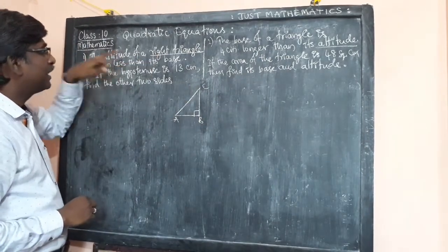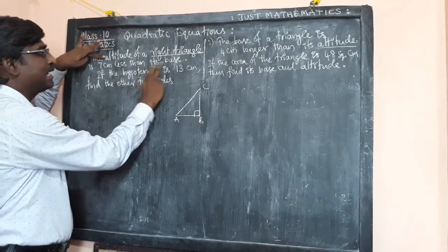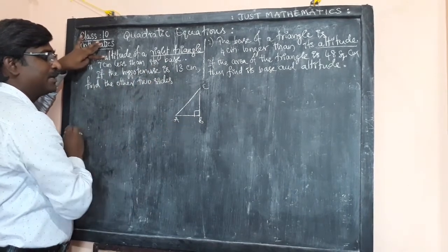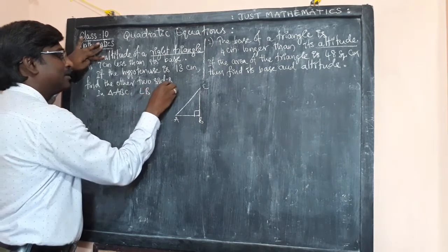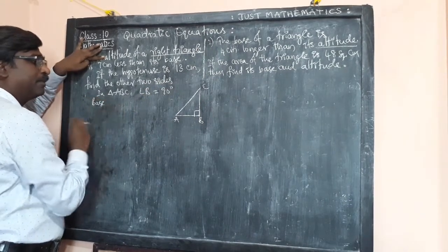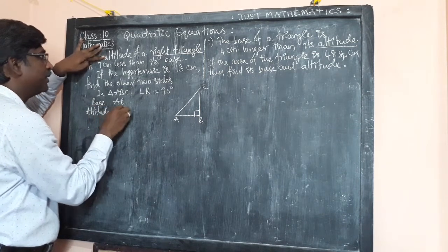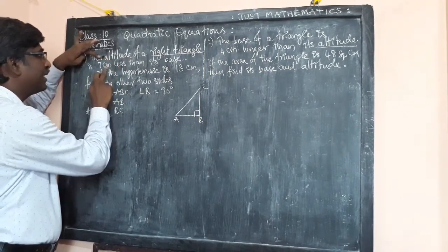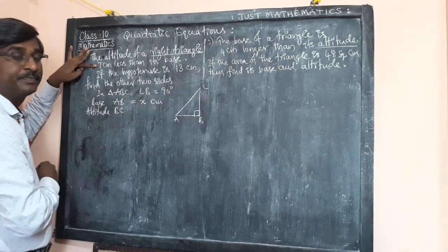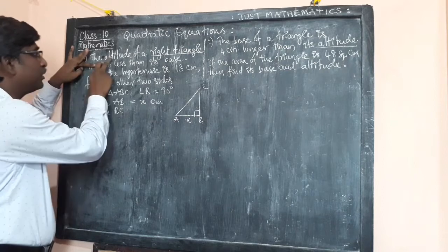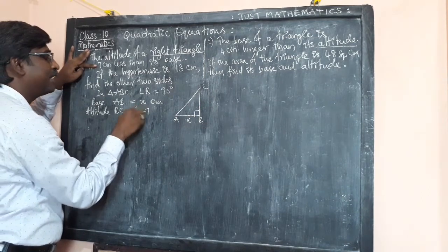Observe that the altitude of this right angle triangle, that is BC, is 7 centimeters less than its base AB. So first let the base AB be x centimeters. Then the altitude BC is 7 centimeters less than the base, which means it becomes x minus 7 centimeters.